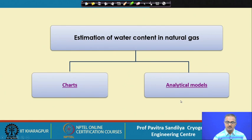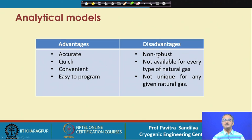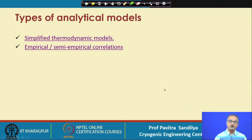Analytical models have the advantage of being quite accurate, quick, convenient, and easy to program. On the other hand, they are not universally applicable. Various analytical models have been reported and are still being developed, and they are not available for all types of natural gases because the composition varies depending on the source. They may not be unique even for any given natural gas. The two broad classifications are: simplified thermodynamic models and empirical or semi-empirical correlations.